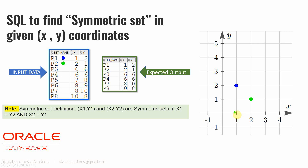Now these two points are said to be symmetric if the X of P1 is equal to Y of P2. For example, this is the X of one point and this is the Y of another point. If these two values are equal, and the Y values — this length and this length — are exactly equal, then these two points are said to be a symmetric set. Visually representing the problem makes it much easier to understand and resolve.